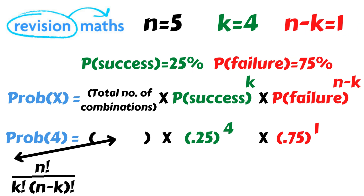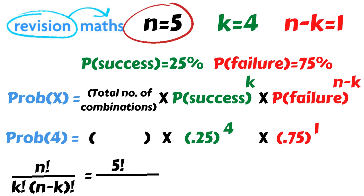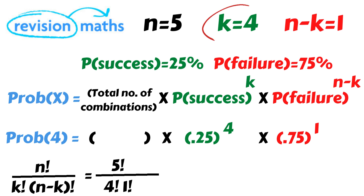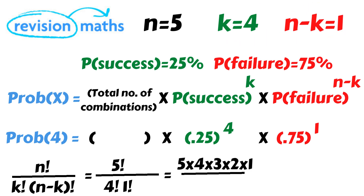Now coming back to the number of combinations, we need to work out all possible outcomes using the formula on screen: n factorial divided by K factorial multiplied by n minus K factorial. In this example that is five factorial divided by four factorial multiplied by one factorial. Five factorial is 5 × 4 × 3 × 2 × 1 = 120. Dividing by four factorial (4 × 3 × 2 × 1 = 24) multiplied by one gives 120 ÷ 24 = 5.